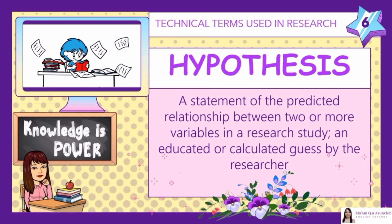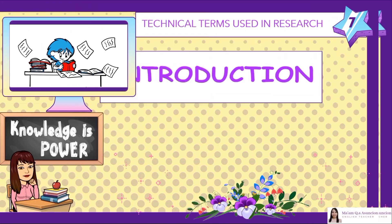Number 6: Hypothesis. A statement of the predicted relationship between two or more variables in a research study. An educated or calculated guess by the researcher. A hypothesis is a specific, clear, and testable proposition or predictive statement about the possible outcome of a scientific research study based on a particular property of a population, such as presumed differences between groups on a particular variable or relationships between variables.